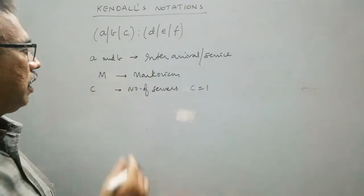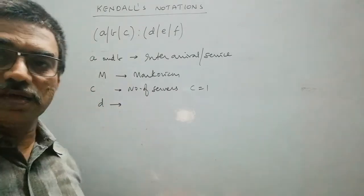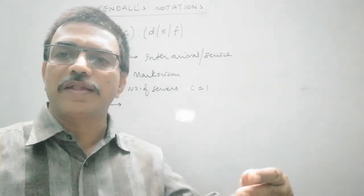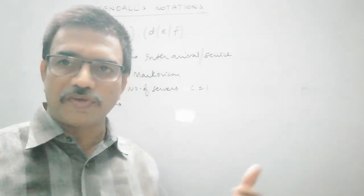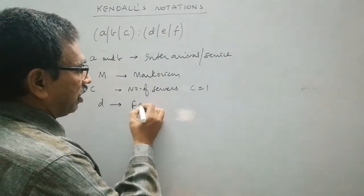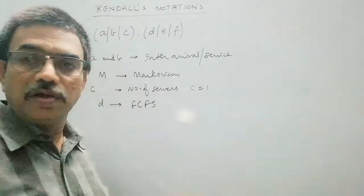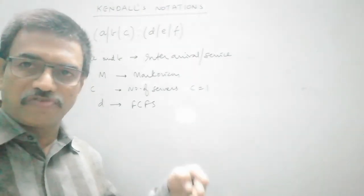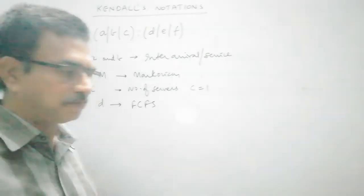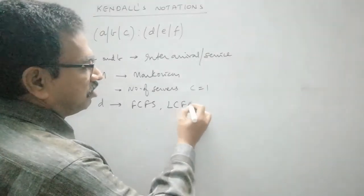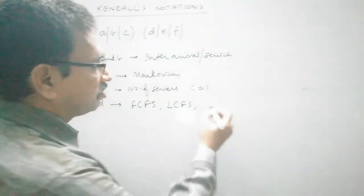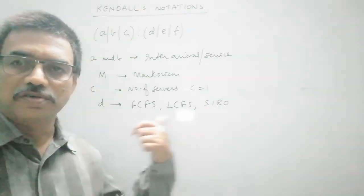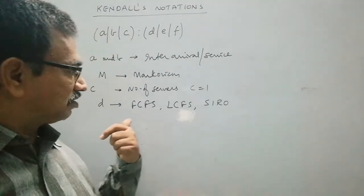Then D is the service discipline — that means how we will take the customers to provide service, and in which order. As explained earlier, we have first come first serve, that is whoever enters the queuing system first will be given first preference for service, or last come first serve, or service in random order. We may follow any one of these service disciplines.